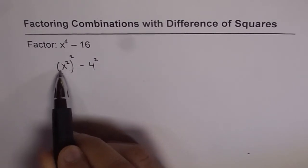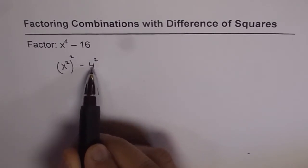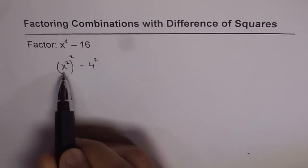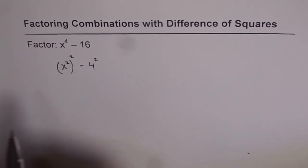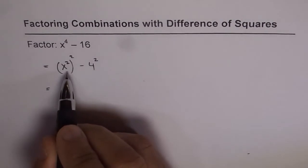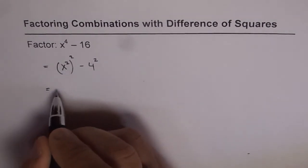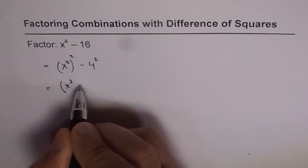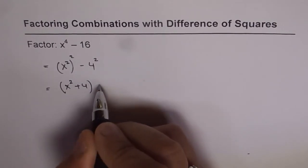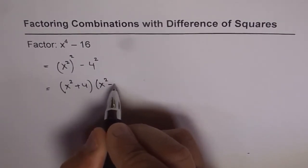This can be treated as a squared minus b squared, where b is 4 and a is x squared. We can factor this as we do a squared minus b squared, which gives us x squared plus 4 times x squared minus 4.